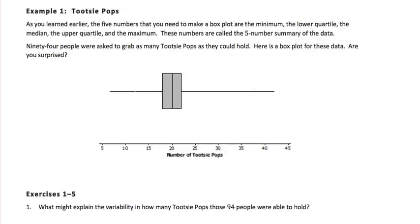As you learned earlier, the five numbers that you need to make in the box plot are the minimum, the lower quartile, the median, the upper quartile, and the maximum. These five numbers are called the five-number summary of the data.